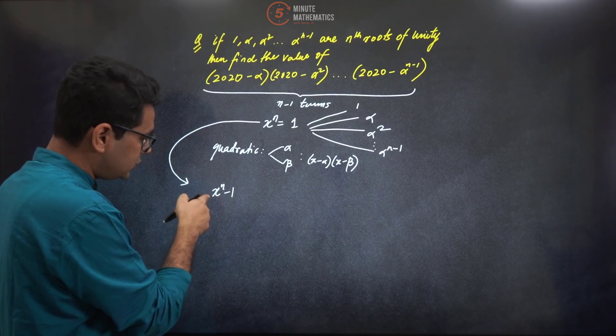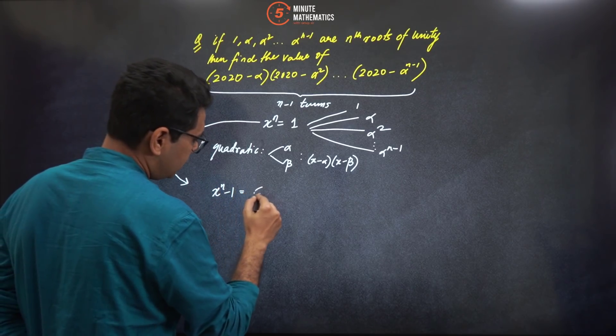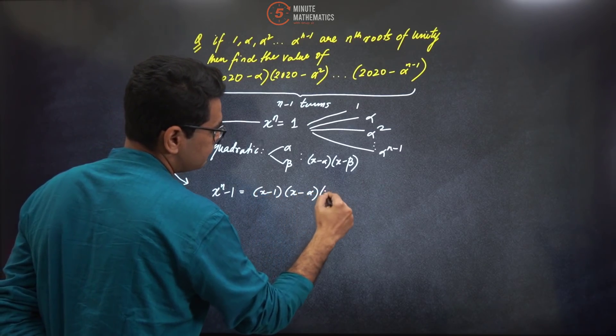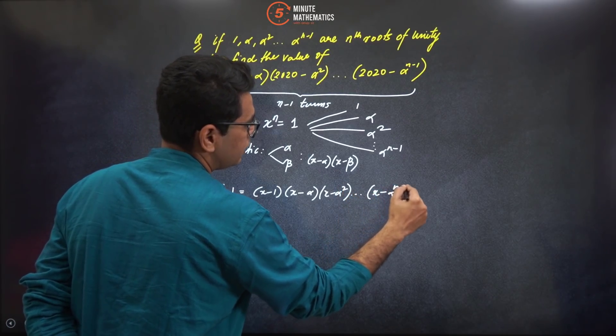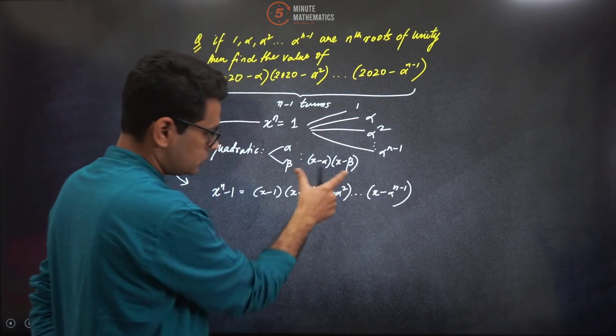The same thing can be applied for any polynomial. So I can say x raise to power n minus one - since the leading coefficient of the highest degree term is one, in the right hand side it will also be one. It could be written as (x minus one)(x minus alpha)(x minus alpha square) up till (x minus alpha raise to power n minus one).